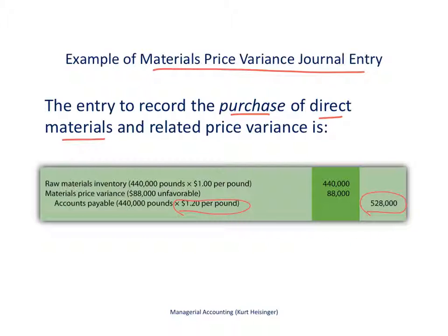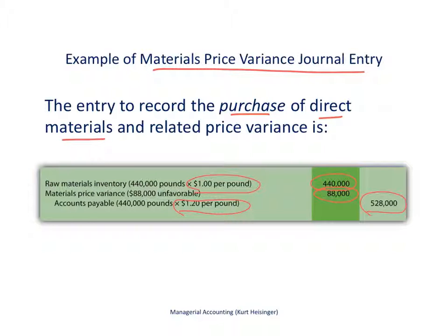The standard established for direct materials was $1 per pound, while we are actually paying $1.20 per pound. We debit raw materials inventory at the standard amount of $440,000, because inventory accounts are always recorded at standard cost. The difference between the standard of $440,000 and the actual of $528,000 — that difference of $88,000 — goes to the materials price variance account as a debit, because it is unfavorable. These variances ultimately close to cost of goods sold, so an unfavorable debit variance increases the expense account.